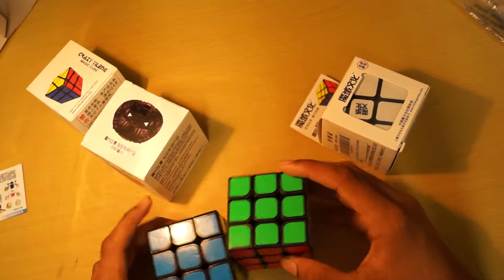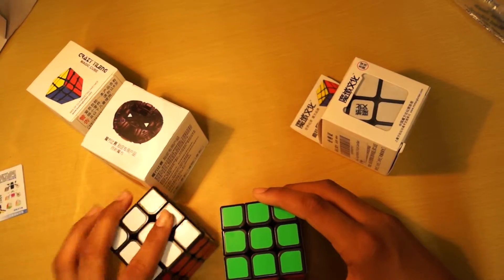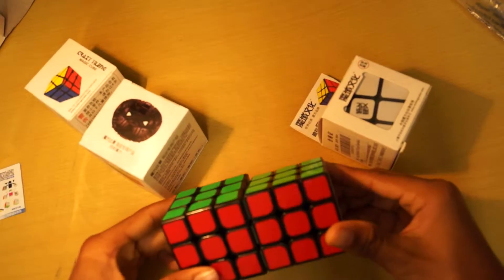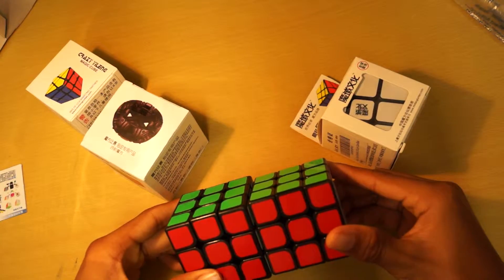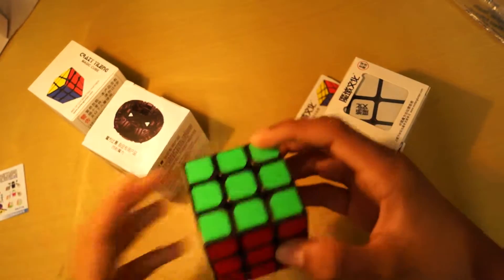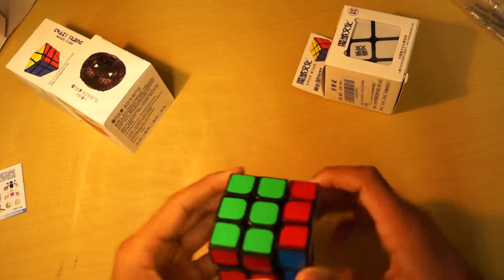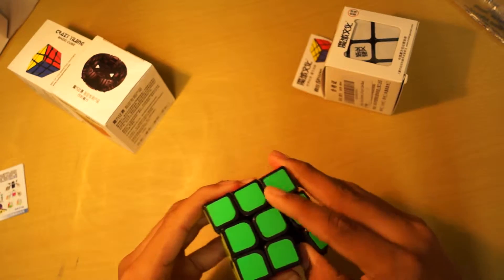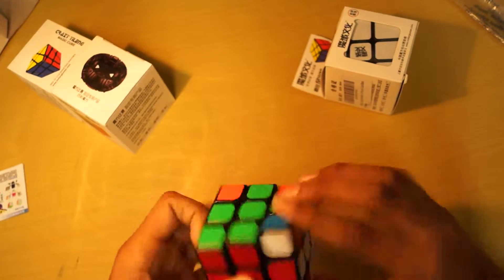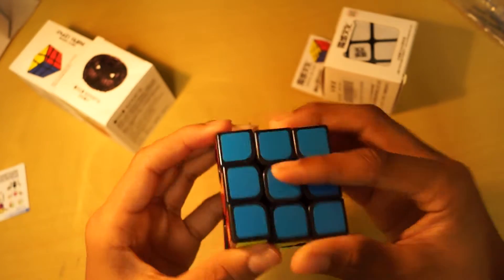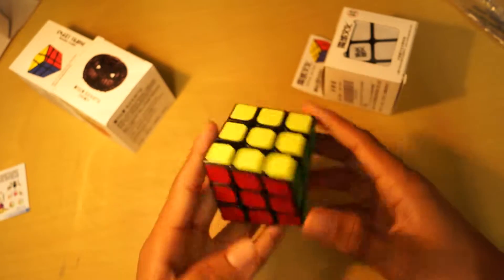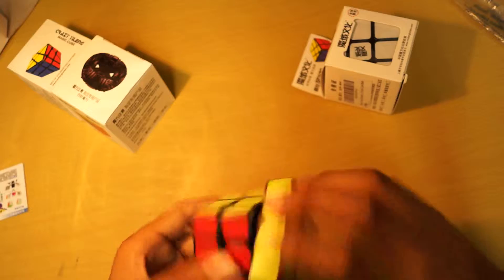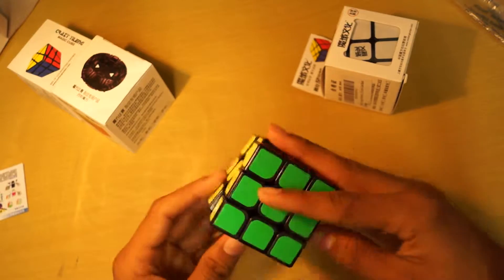It's definitely good to have in my collection. Compare it to an AoLong. Not that big of a difference in size. Let's go on with the first turns. Wow, it's very smooth. Very dry, like all Moyu cubes, but it's also a bit lubricated on the outside. And I actually feel a little bit smaller than the AoLong. But it feels great. Good cube.